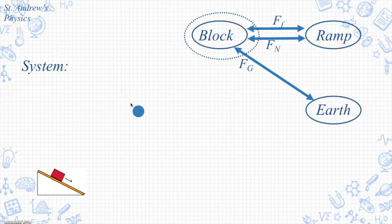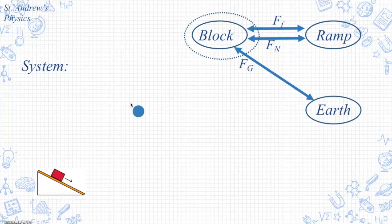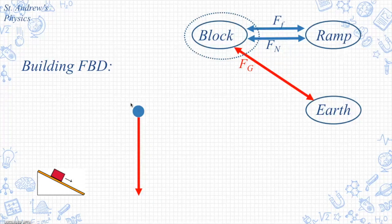As most students are aware, the interaction on the block by the Earth will be directed towards the center of the Earth, or in our frame of reference, down. We'll start at our object, which is the block, or the dot in this case, and draw an arrow down.